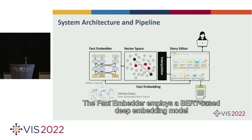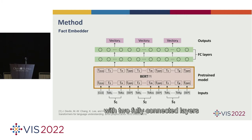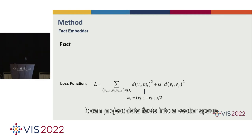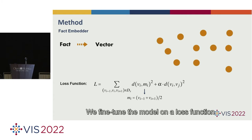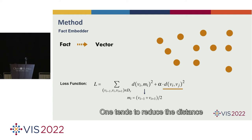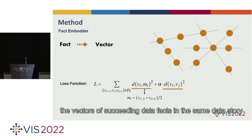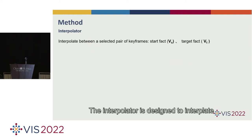The fact-embedder employs a BERT-based deep-embedding model with two fully connected layers. It can project data facts into a vector space. We fine-tune the model on a loss function, which contains two parts. One tends to reduce the distance between related facts. The other tries to line up the factors of succeeding data facts in the same data story.